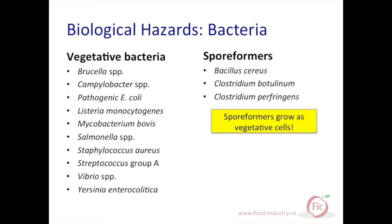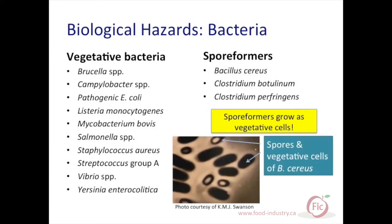Note that spore formers grow as vegetative cells. In the photo, the bright ovals are heat-resistant Bacillus cereus spores, and the larger dark rod-shaped bacteria are Bacillus cereus in its vegetative state. Spores themselves are not hazardous as long as they remain dormant. However, they may become a hazard in the food if they are exposed to favorable conditions that allow germination and growth as vegetative cells.